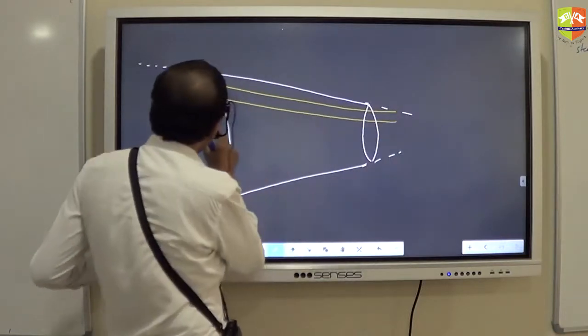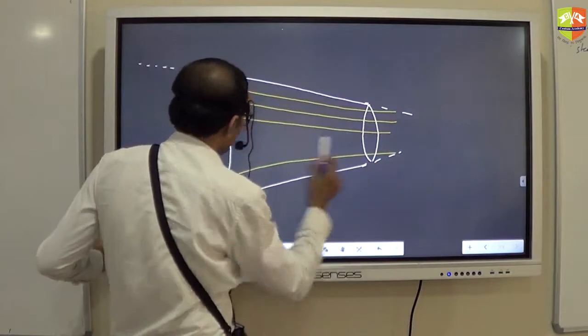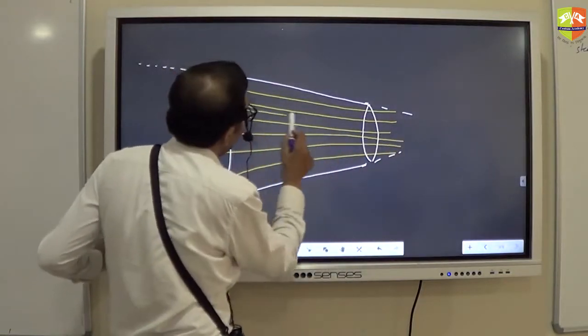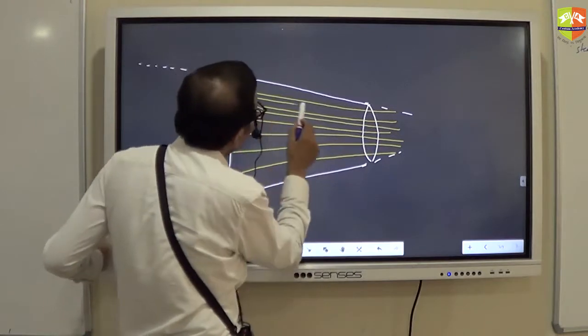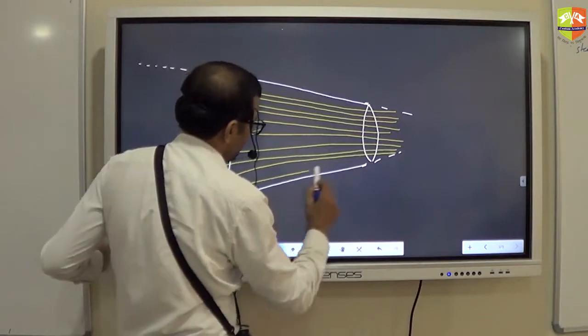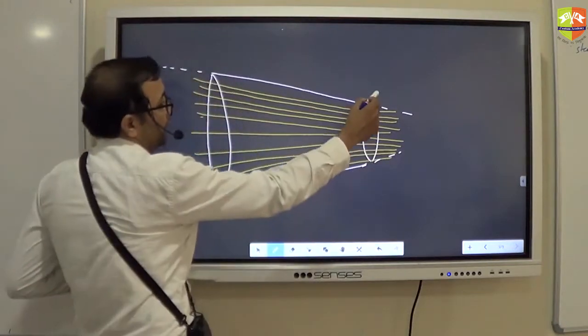Now, if I draw a streamline starting from here, then this will be there. Now, there are infinite particles, right? So I can draw those many number of streamlines. Now, tell me one thing. Where do you think the velocity of the fluid is more? Here.